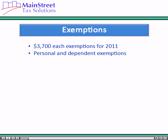Exemptions reduce your adjusted gross income. Generally you can deduct $3,700 for each exemption you claim in 2011. There are two types of exemptions: personal exemptions and exemptions for dependents. While the amounts are the same, different rules apply to each type.